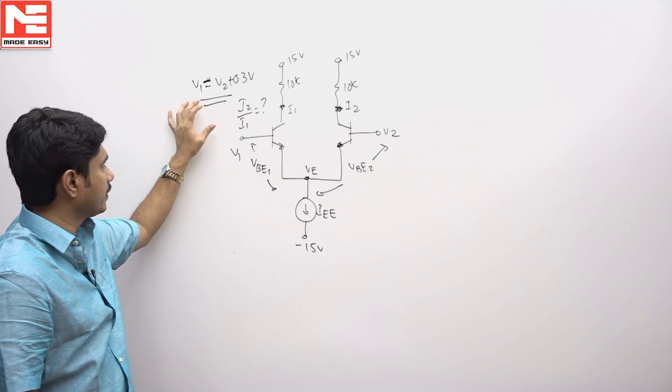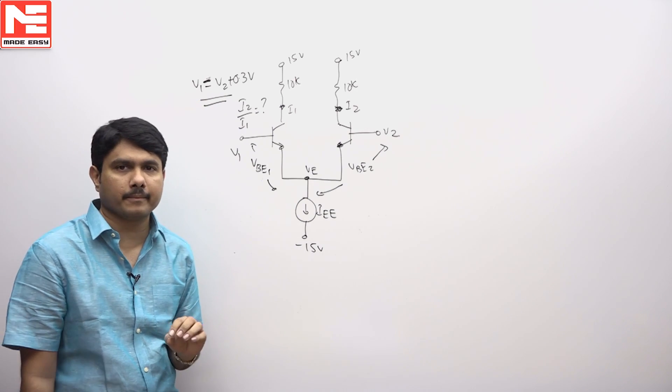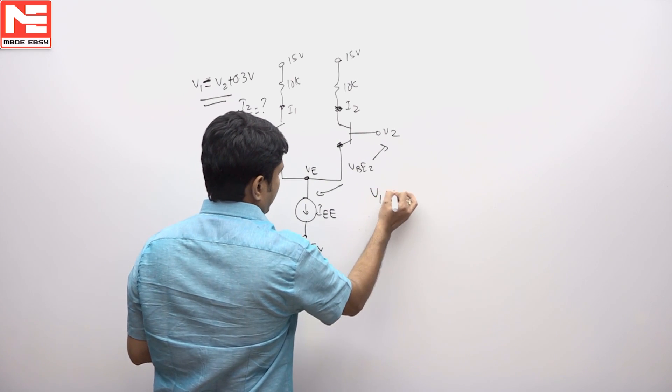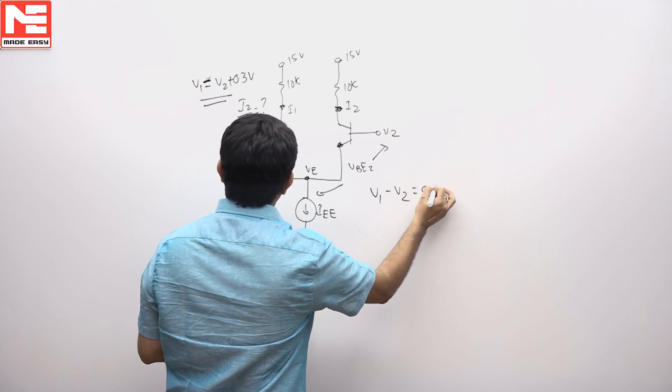He has given some equation V1 is equal to VT plus 0.3. The meaning is V1 minus V2 can be written as 0.3.